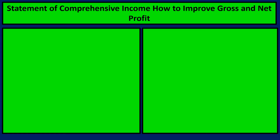A fairly common question on the Statement of Comprehensive Income is how you can either improve your gross or your net profit. What we're going to do is look at the different ways and think about how they work. Gross profit is calculated by sales revenue minus cost of sales. So if we look at that equation, we can see that either we have to increase revenue or decrease cost of sales. There are two ways that we can increase revenue.